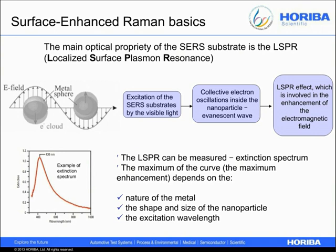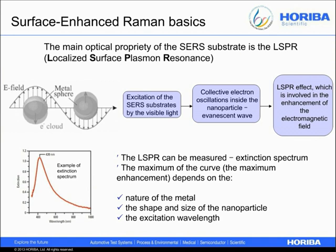Here is an example which emphasizes the close relation between the LSPR and the nanoparticle geometry. SERS substrates containing oblate gold nanoparticles with different sizes were analyzed. By measuring the extinction spectra for each oblate type, it was observed that the LSPR — the maximum of the curve — is different. We can see that in the image on the left part of the slide. In the right part of the slide, we see a graph showing the evolution of the LSPR position as a function of the oblate size. As the particle size increases, the LSPR position is shifted into the near-infrared range. This result proves that the LSPR can be tuned over the whole visible range.